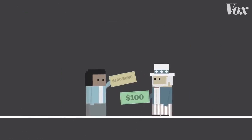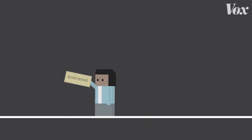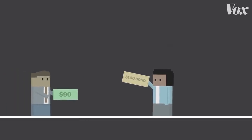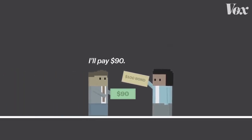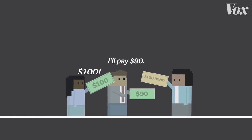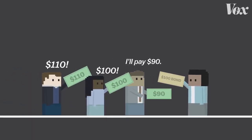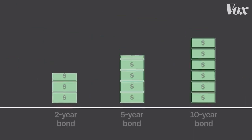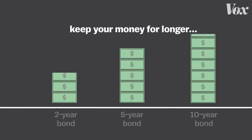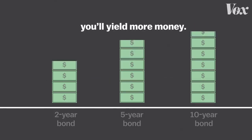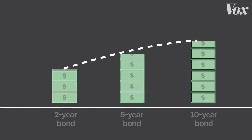Most people don't buy bonds from the government. They buy and sell them from each other in the secondary market. The prices change based on how much demand there is for a bond, which means the amount of profit you can make on each bond changes every day. Still, the basic rule holds: if you let the government keep your money for longer, you'll yield more money. Trace these bars on any given day and you get a curved line showing the yields of different bonds — or what people call the yield curve. And normally, it points upward.